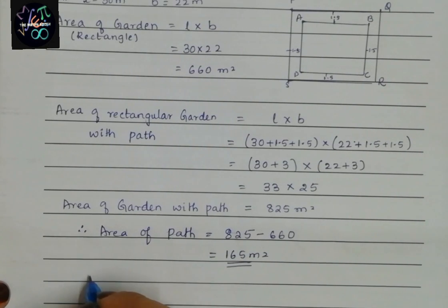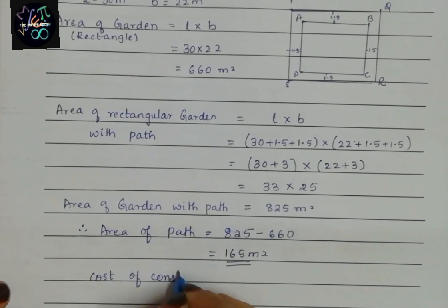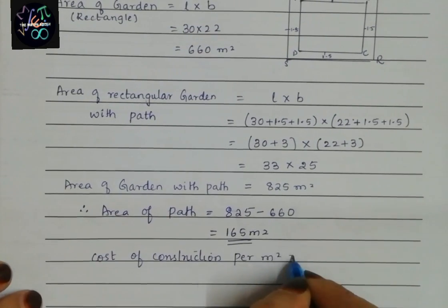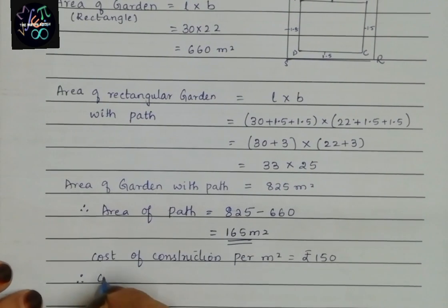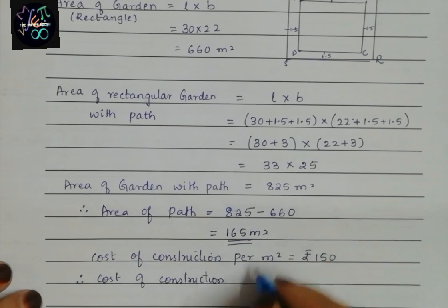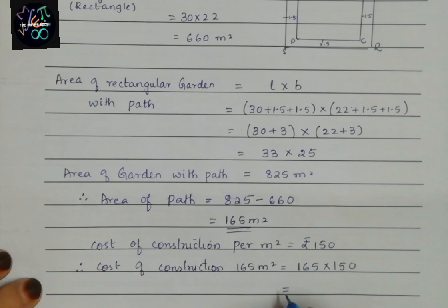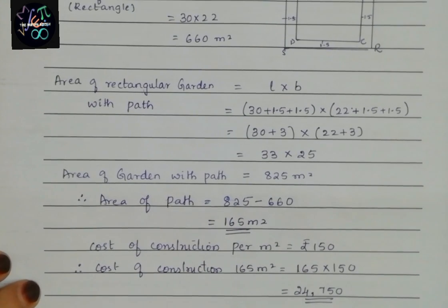Cost of construction per square meter is rupees 150 as given in the question. Therefore, cost of constructing 165 square meters = 165 × 150 = rupees 24,750. This is the answer for question number 30.